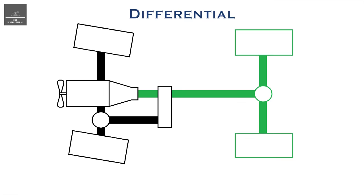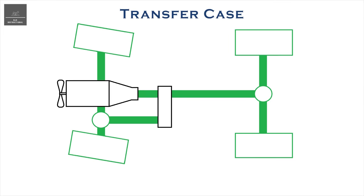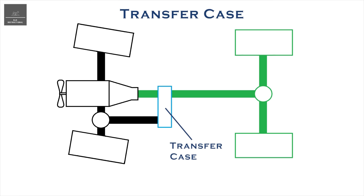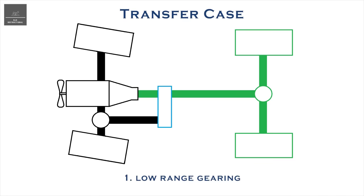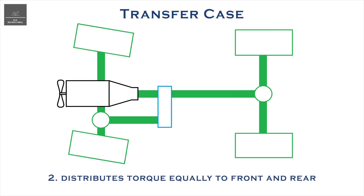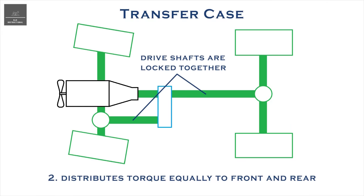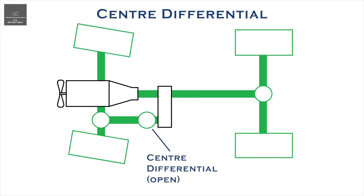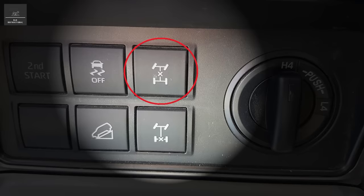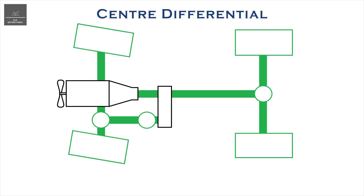Now, in a 4WD system, between the transmission and drive shaft is a transfer case. In a part-time 4WD system, the transfer case has two major functions. The first function is to multiply the torque through lower gears — that is low range gearing. The second role is where part-time and full-time 4WD systems are different. In a part-time 4WD system, either in 4 high or 4 low, the transfer case will distribute the torque equally to the front and rear differentials, and does this by locking the front and rear drive shafts together. However, in a full-time 4WD system, a centre differential lock is used instead to distribute the torque equally to the front and rear differentials, because a full-time 4WD also requires a differential action between the front and the rear wheels during normal driving, but more on this shortly.